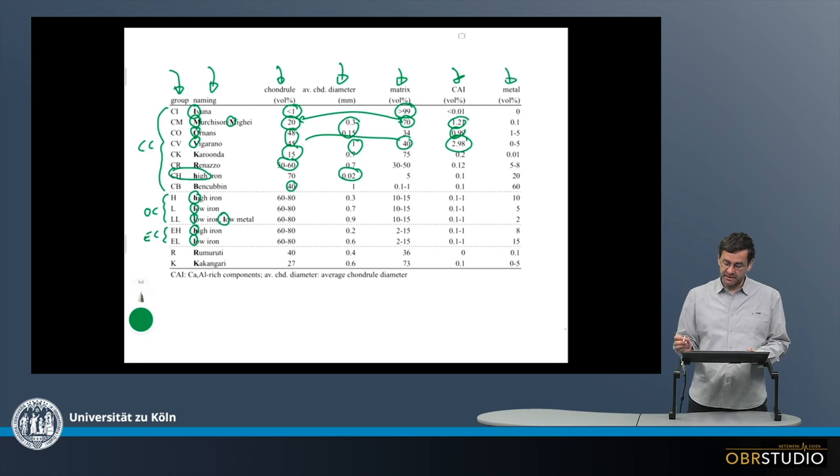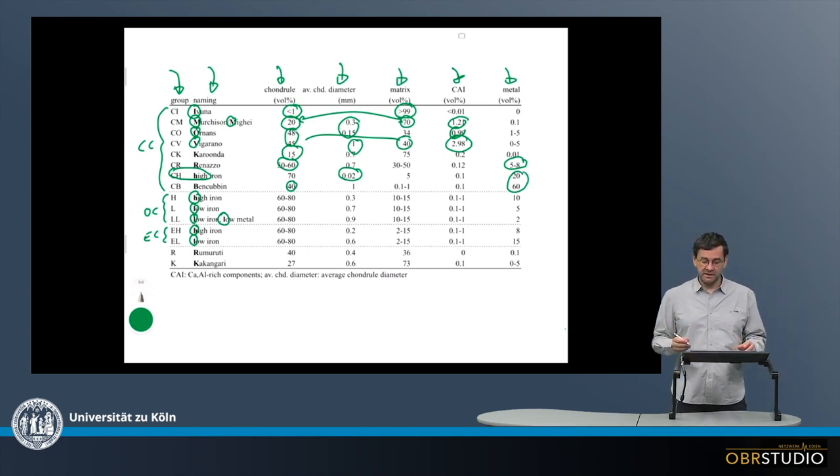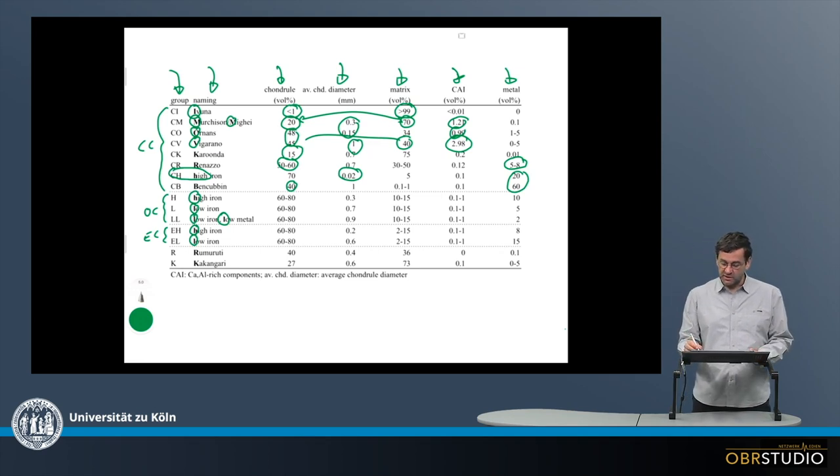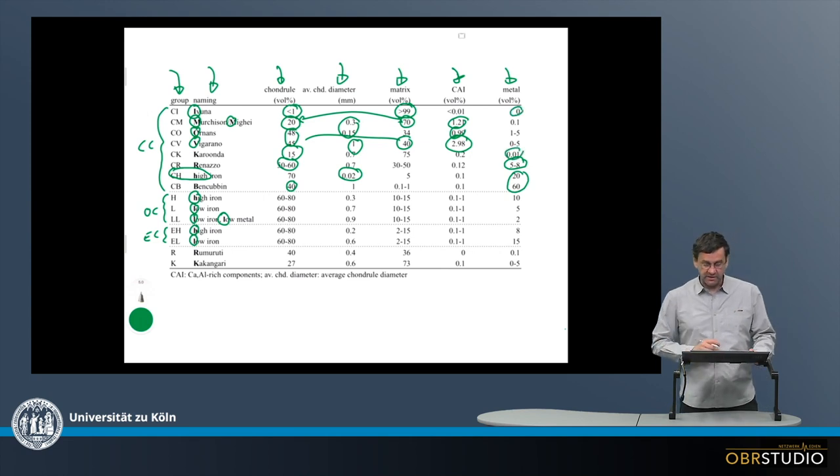And finally, metal. Metal in carbonaceous chondrites is rather rare, so maybe in CR it's quite high, five to eight. Then in CH and CB, this is anomalously high. This is why CH chondrites are called CH, they have a lot of iron. Otherwise, this is typically below something like 5 percent and down to almost zero percent in cases of CI or CK, although alteration might have played a role here.